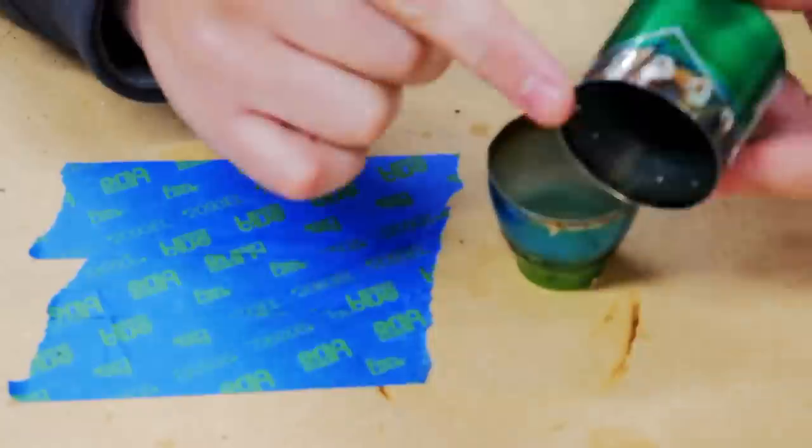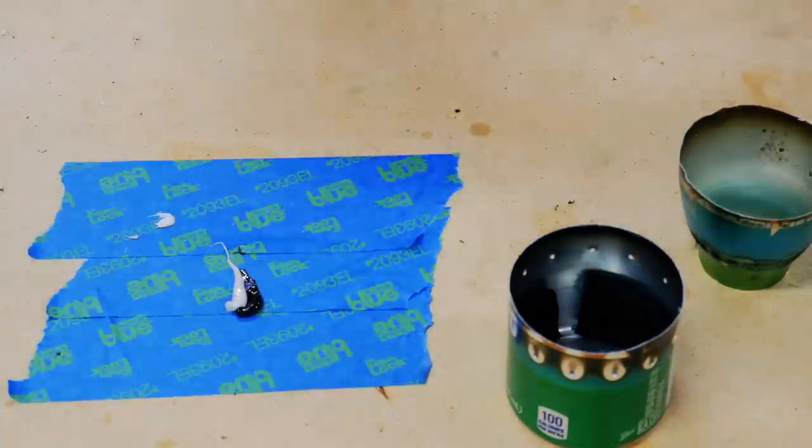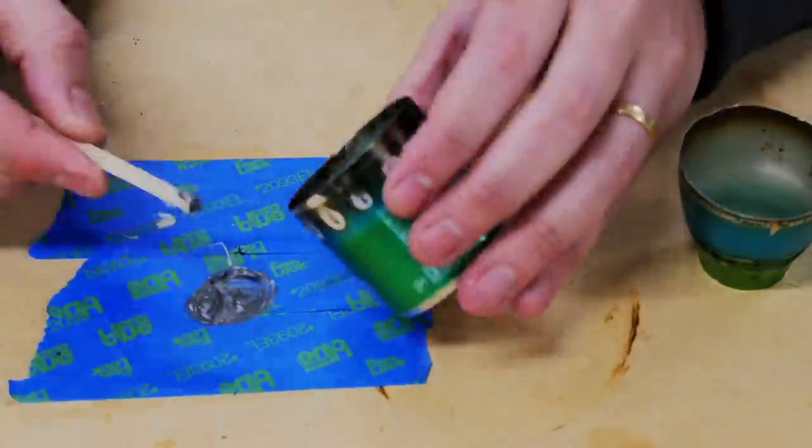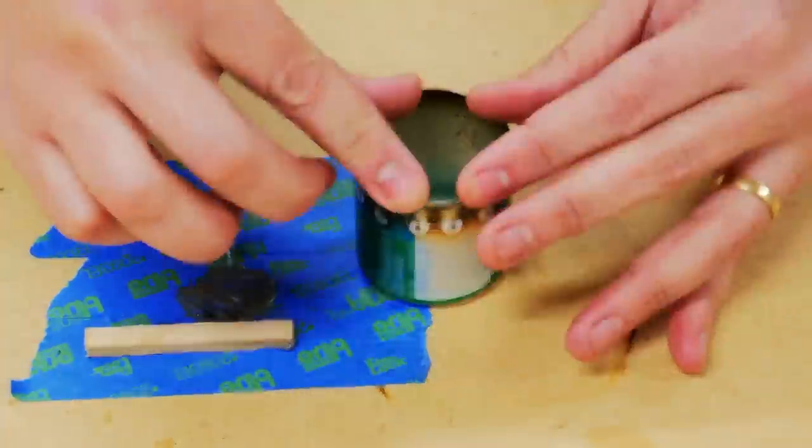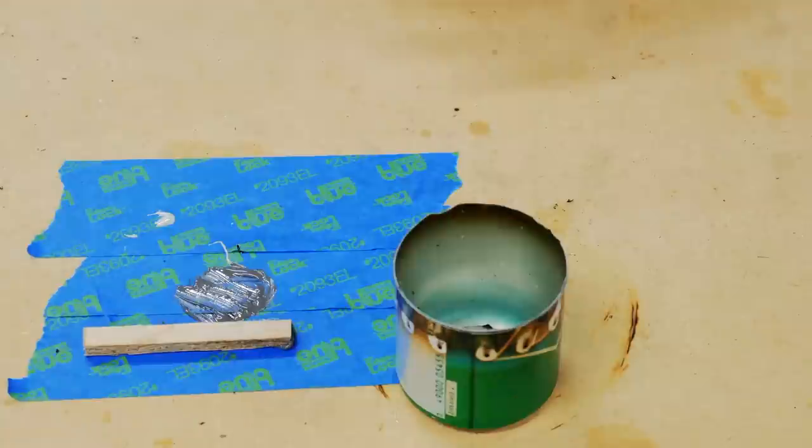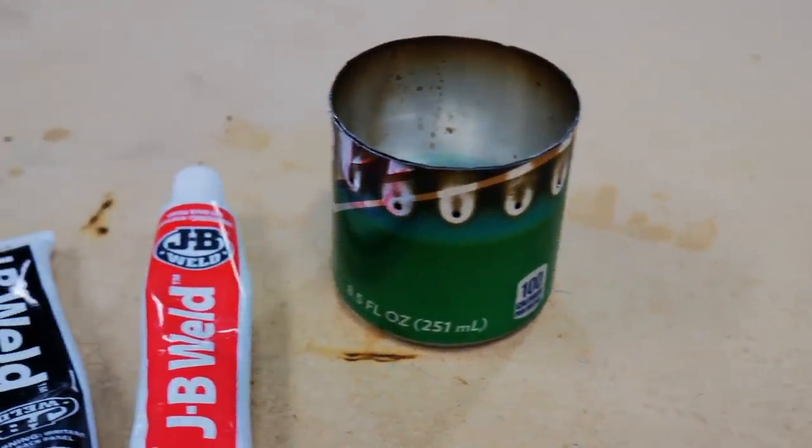So I decided to put a little bit of JB Weld on the inside just to create a little bit of a seal. And again, I think that after this cured, it worked even better than before. Make sure you don't plug those holes with the JB Weld though. I did plug one, I had to go back and fix it. So there it is, simple 14 gram stove, really happy with it.